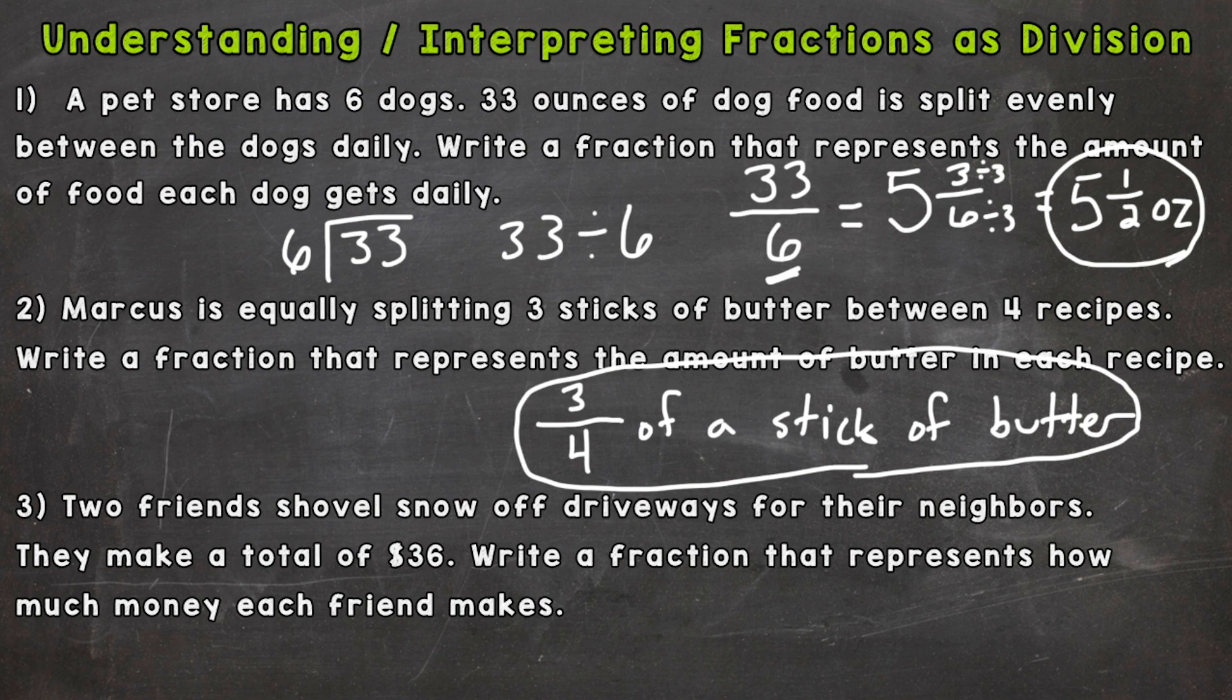What's being divided up? The 36 dollars. So that's going to be our numerator. And what is the number it's being divided by? That 36 is being split between two friends, so that's your denominator or bottom number.